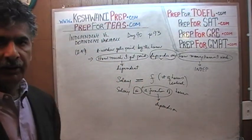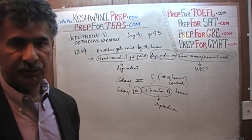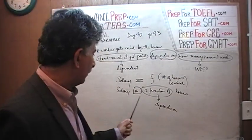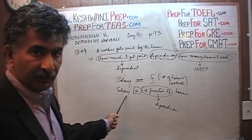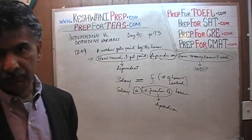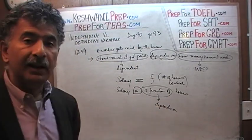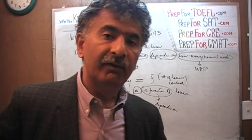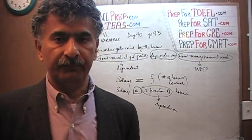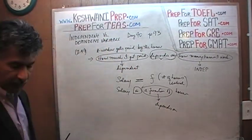When you say 'is a function of,' the English language translation would be 'depends on.' A mathematician would say it is a function of, which is another way of saying it depends on. My salary depends on the number of hours I work. In the language of mathematics, we say my salary is a function of the number of hours I work.